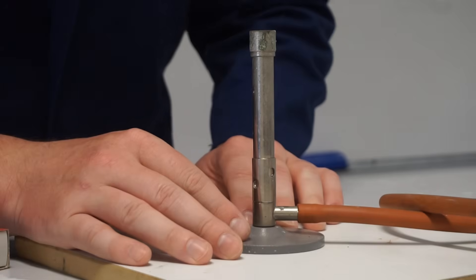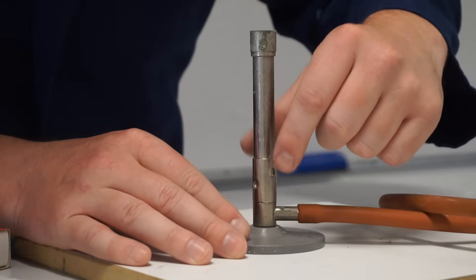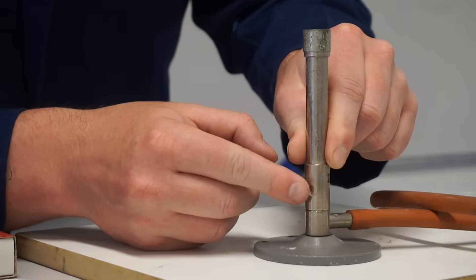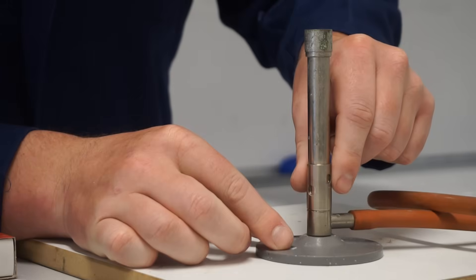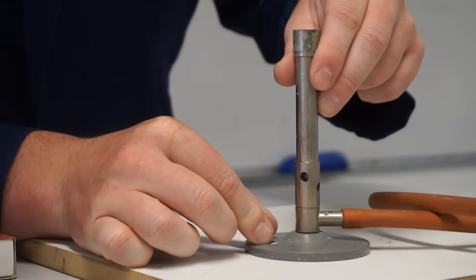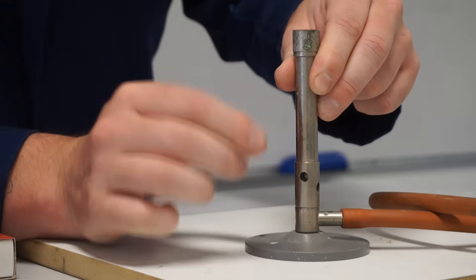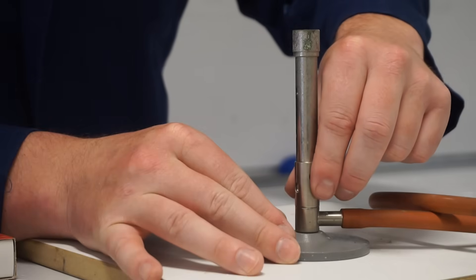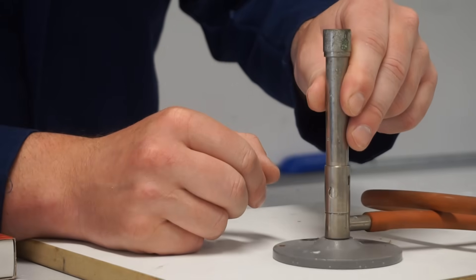We're about to light the Bunsen burner and we need to firstly ensure that this air hole is closed, that you can't see through this hole in the collar. If we turn the collar we can see that we open the air hole and we'll use that later on when we're heating things up but for now when we're lighting it we ensure that the air hole is closed.